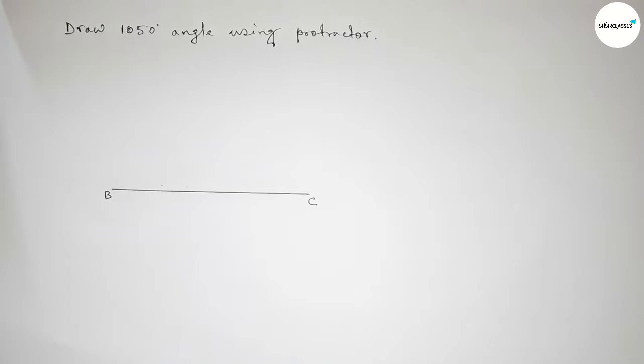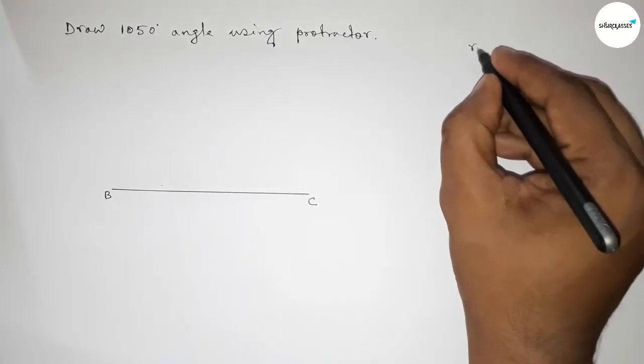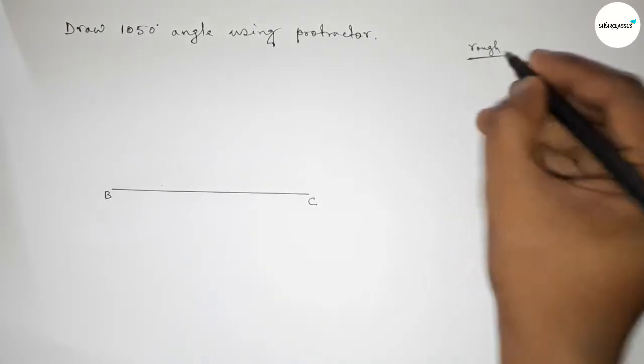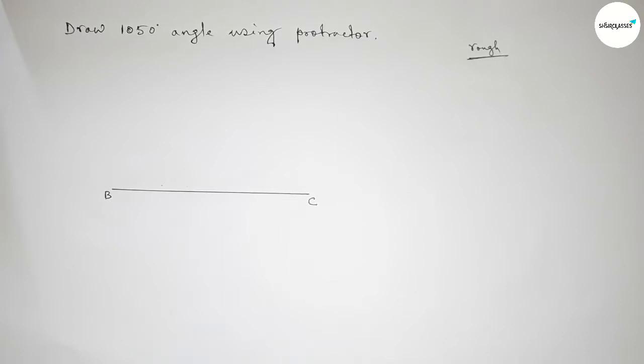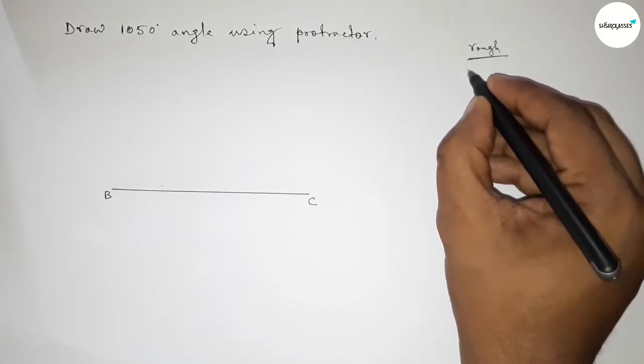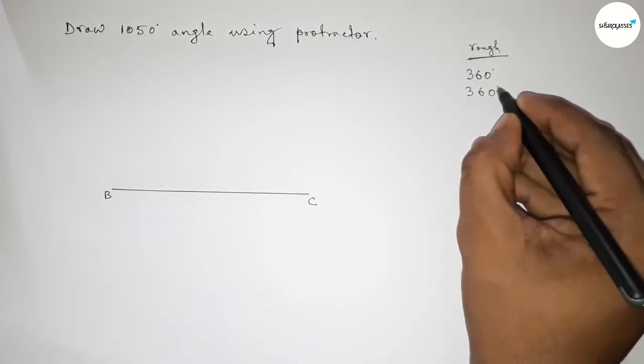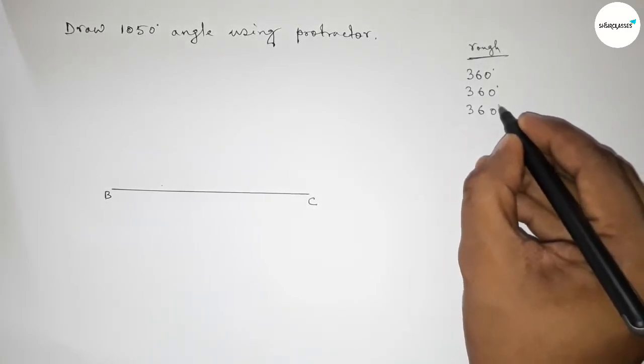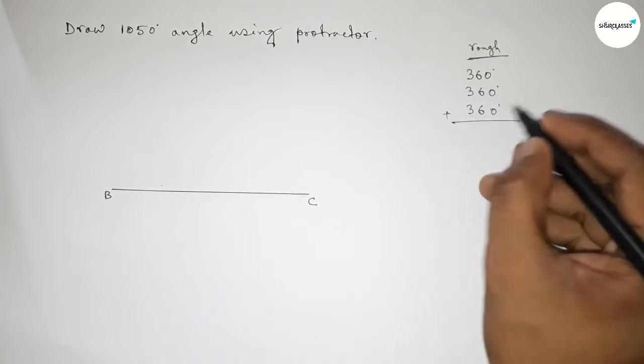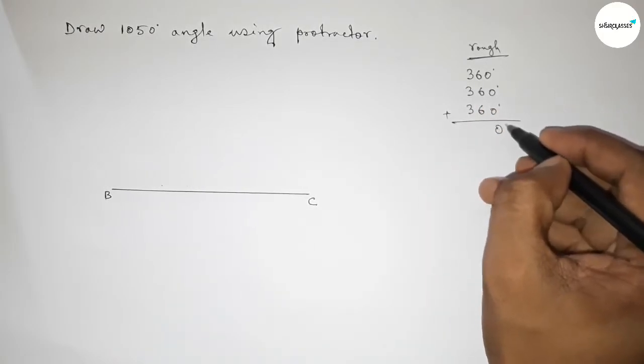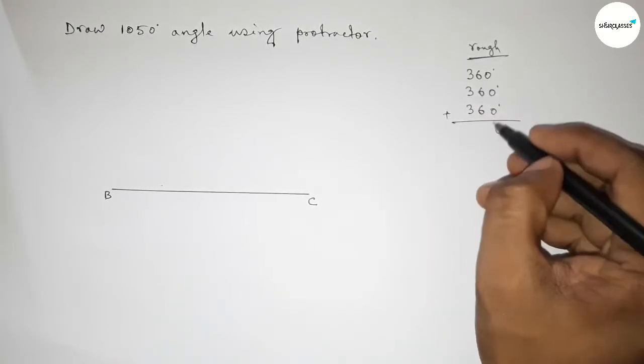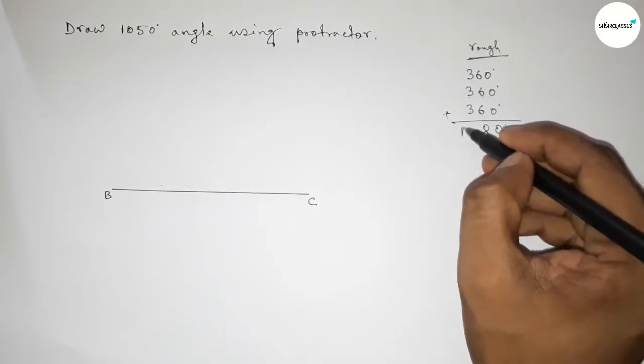Now roughly discussing some important calculation here. So first adding 360 degree angle three times: 360 degrees plus 360 degrees plus 360 degrees. Then adding this, so zero, this is 18 carry one, so this is one, so zero.